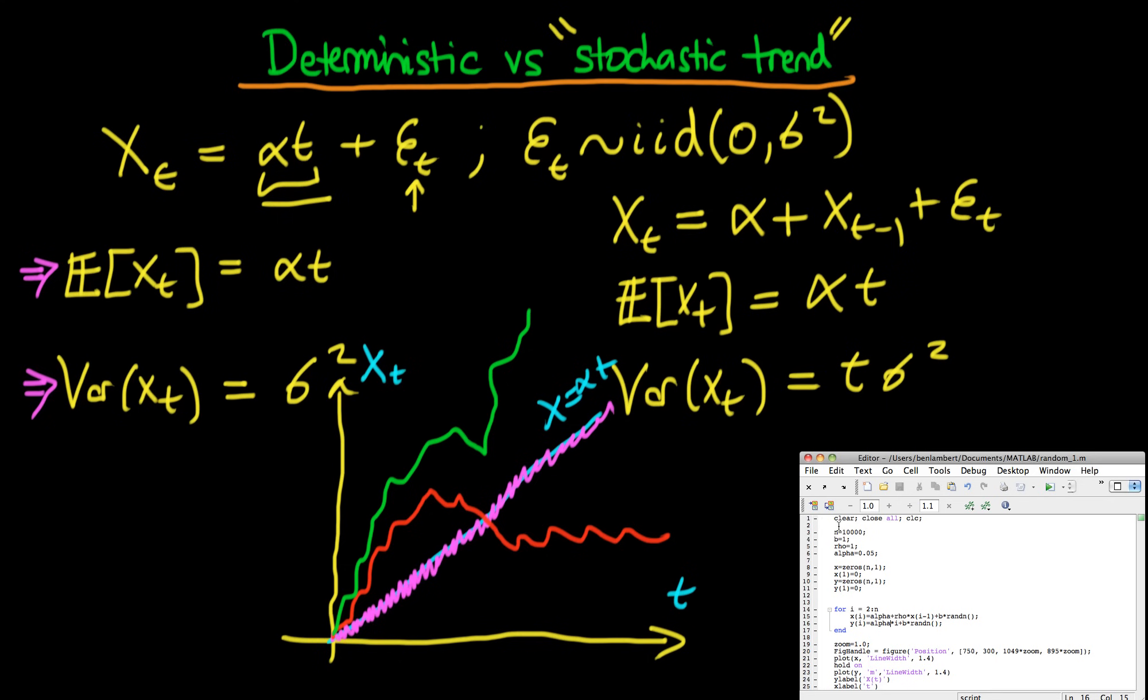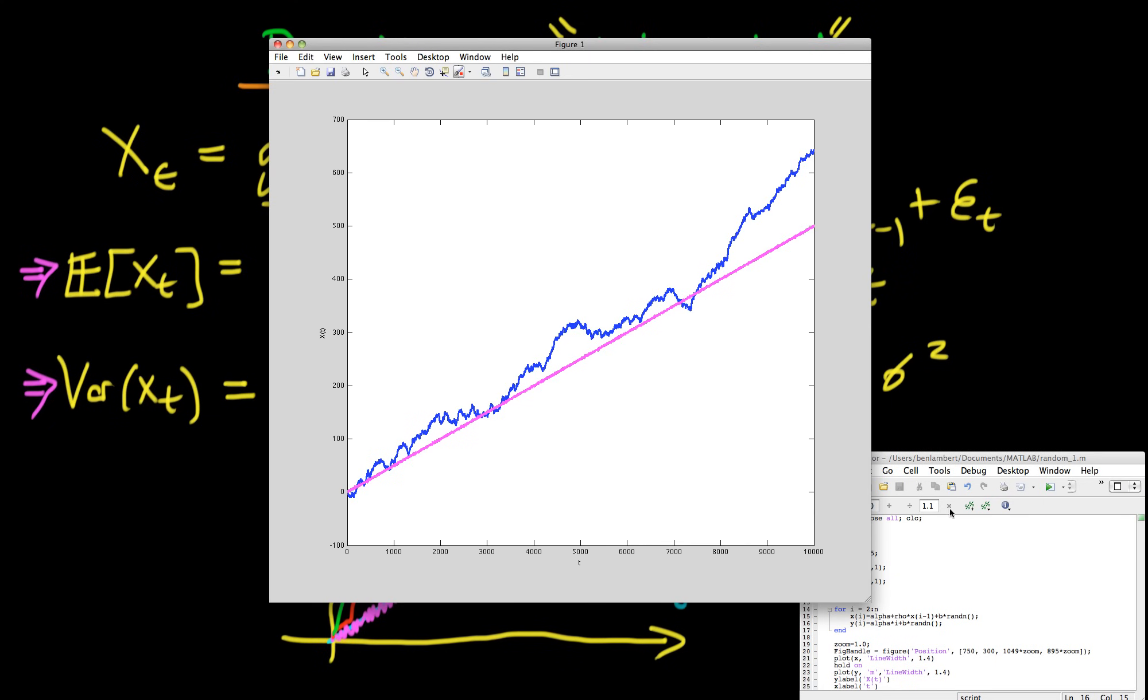Okay so here's my program in the bottom right of your screen. As I say I'm providing this code below the video so if you want to run this yourself you're more than welcome. And if I then run this simulation, the pink series here is our deterministic trend model, whereas the blue line is our random walk with drift and you can see straight away that they are very very distinct from one another. Even though they both have exactly the same Et in them, they look very very different.